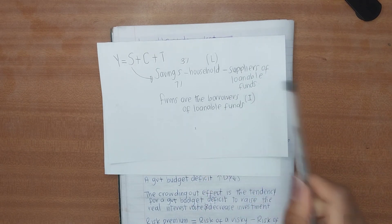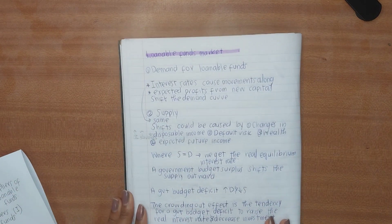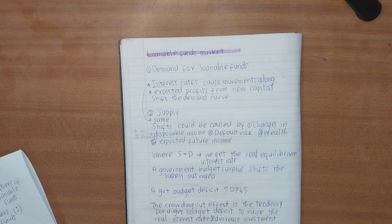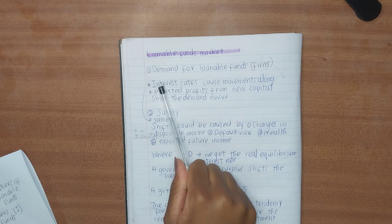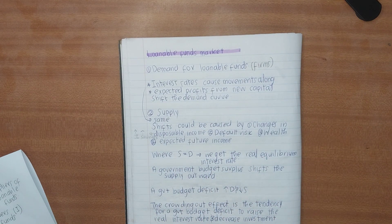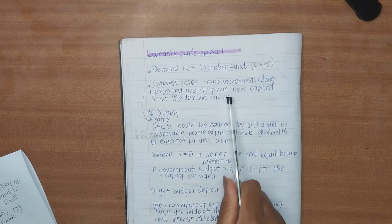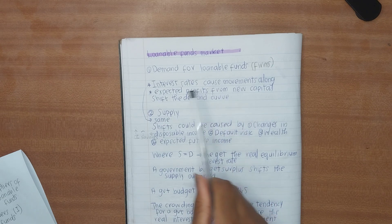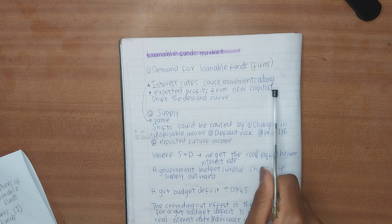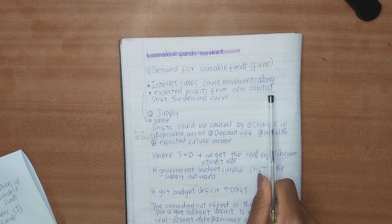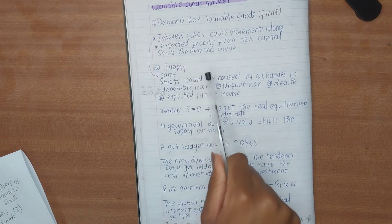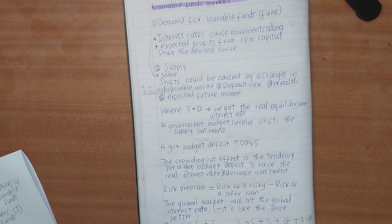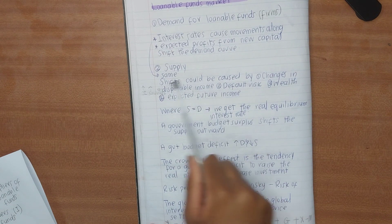Households are suppliers of loanable funds; firms are the demanders. Real interest rates cause a movement along the demand curve, while expected profits cause a shift in the demand curve. The same applies to supply: the real interest rate causes movements along the supply curve, whereas anything other than price — i.e., other than the real interest rate — causes a complete shift in the supply curve.